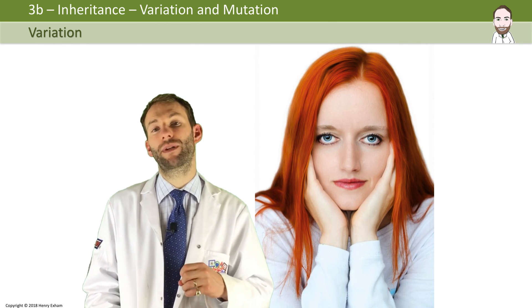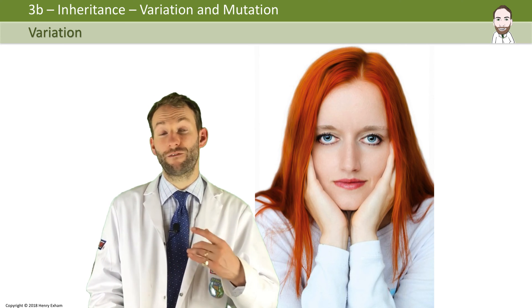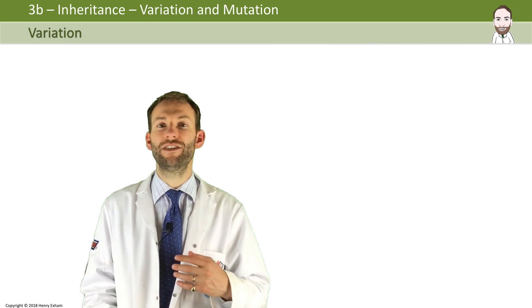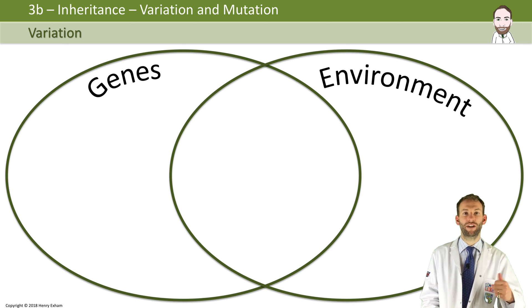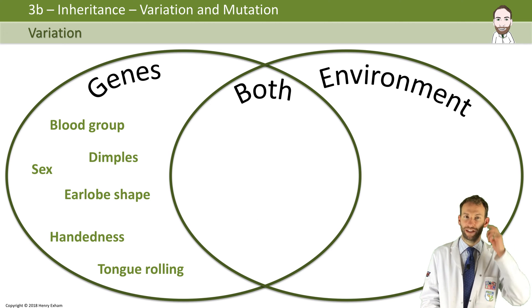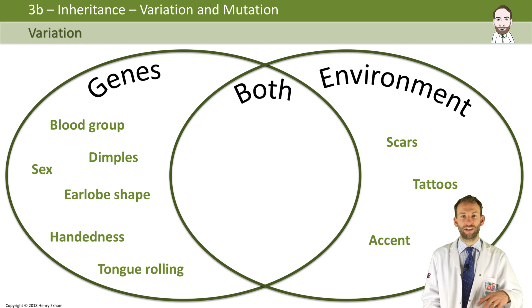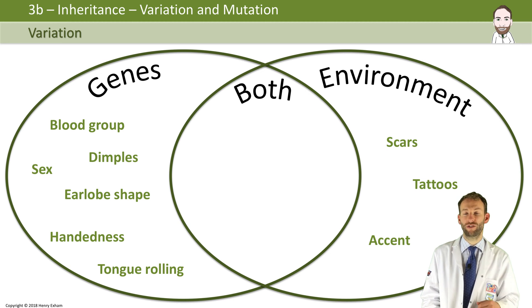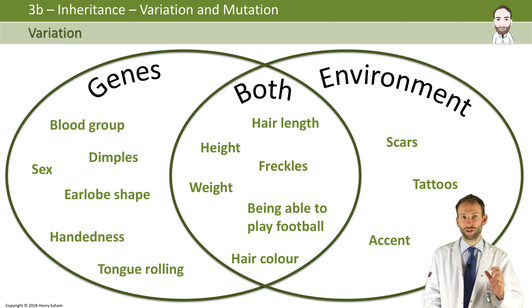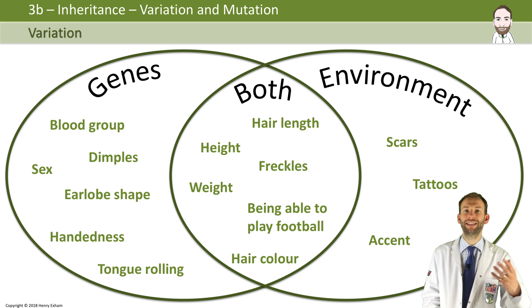Others, such as hair color, can be influenced by both genes and environment. We can represent characteristics or phenotypes in a kind of Venn diagram like this. Some are just controlled by genes: things like blood group, sex, earlobe shape, whether they hang down or are joined in, whether you can roll your tongue, and handedness. Some are purely environmental, like your accent, tattoos, and scars — they're not in your genes and will not pass on to your offspring.